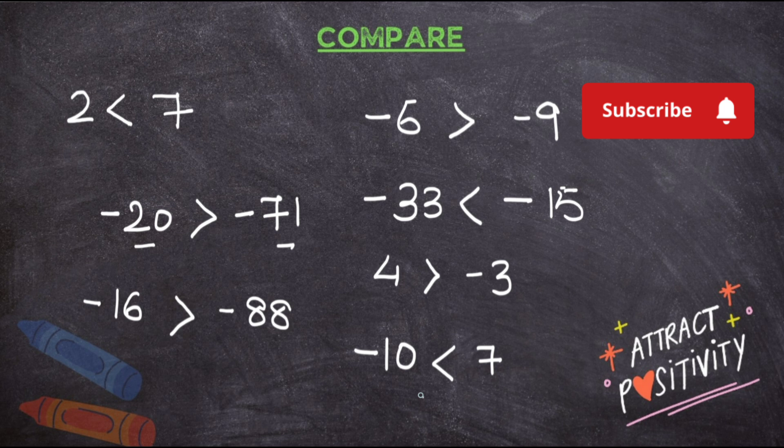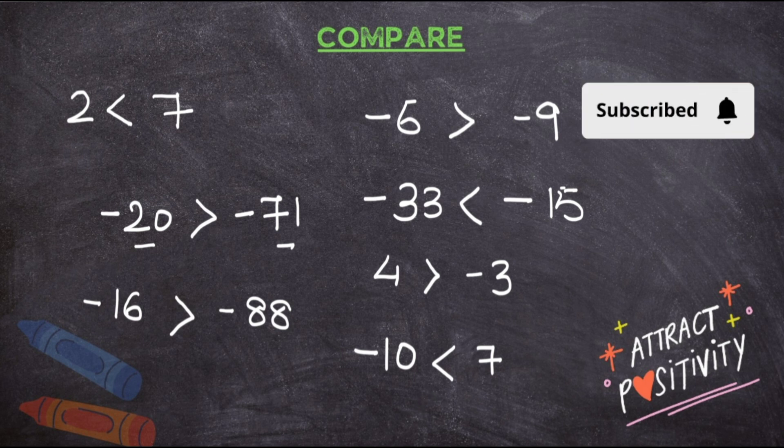As I said, if you are comparing between a positive and negative number, in that, negative number will always be a smaller number and positive number will always be a bigger number. You don't have to think much. But the confusion comes when there are two negative numbers. So in that case, you have to remember: bigger the number, smaller the value. So hope you have understood this.